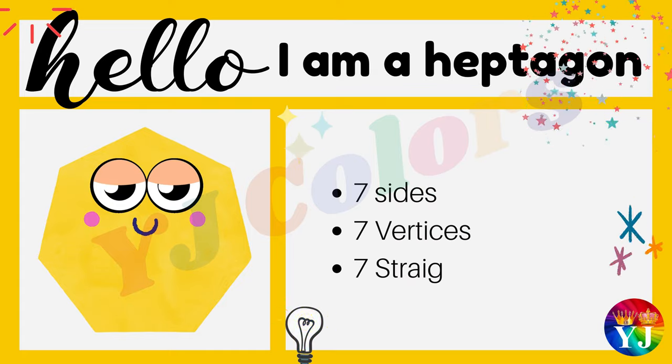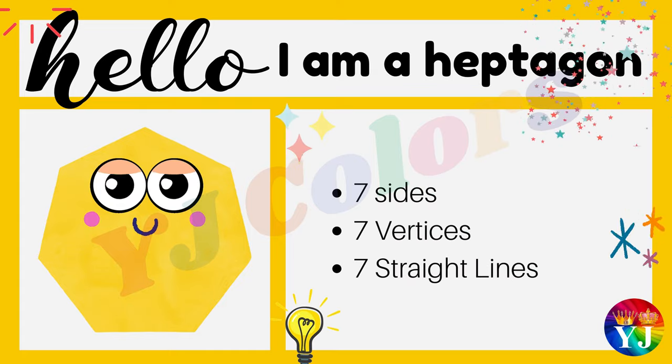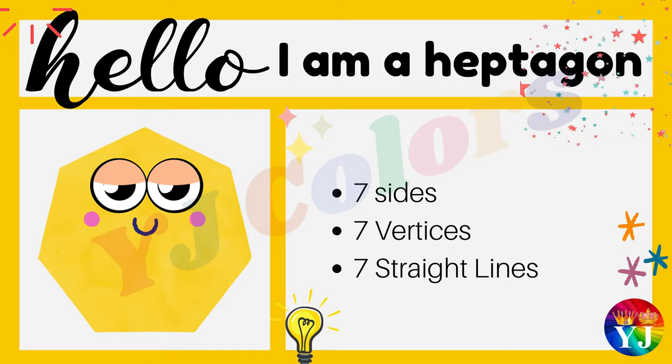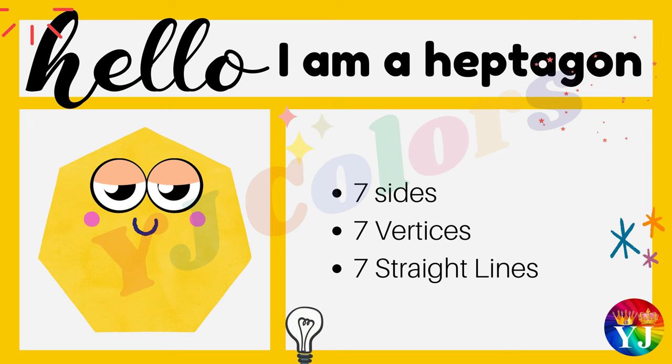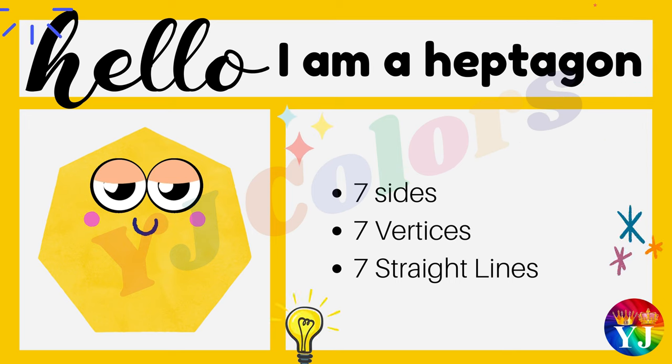Hello, I am a hexagon. I have seven sides, seven vertices and seven straight lines.